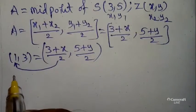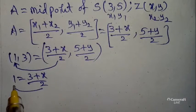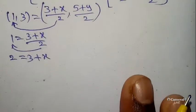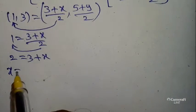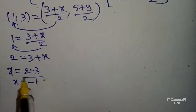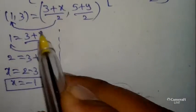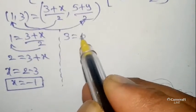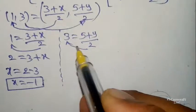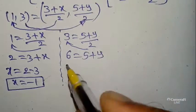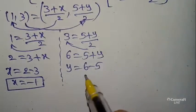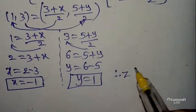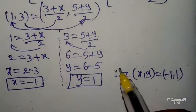Equating the x-values: 1 = (3 + x)/2 → cross multiply: 2 = 3 + x → x = 2 − 3 = −1. Equating the y-values: 3 = (5 + y)/2 → 6 = 5 + y → y = 1. Therefore Z = (x, y) = (−1, 1).